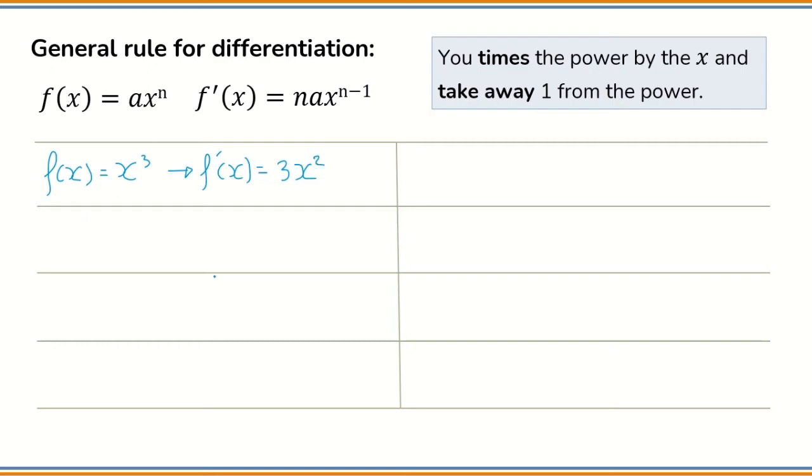Another example. f(x) equals x to the power of 5. The derivative function f'(x) equals 5 times x, and 5 minus 1 is 4, so x to the power of 4. This is the derivative function.